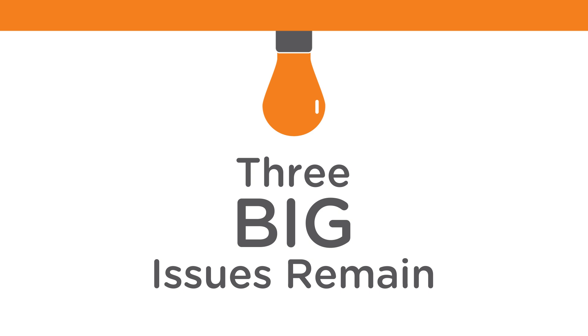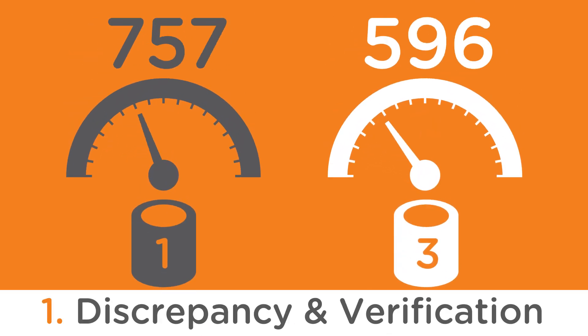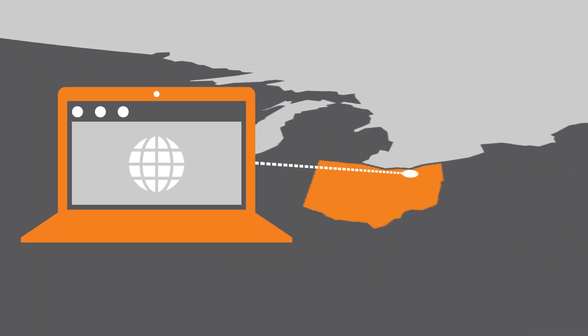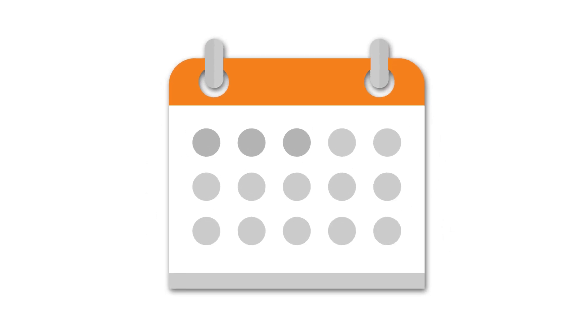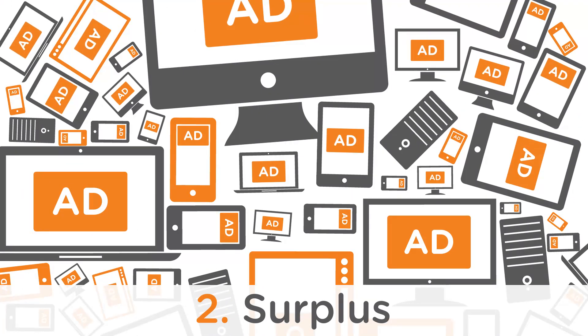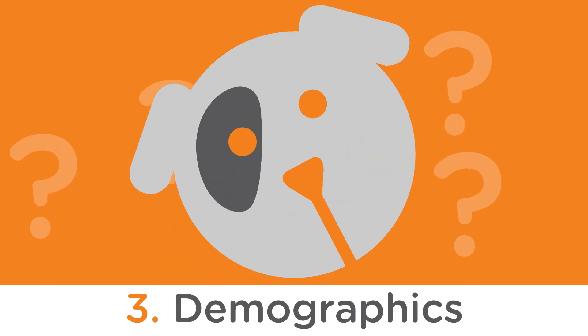But three big issues remain. Discrepancy and verification: first- and third-party servers don't always agree on the number of impressions and clicks, and advertisers need to know for sure if those iPhone users in Cleveland really saw that ad on Saturday. Surplus: there are more ads across channels and formats than publishers can sell, and it's hard to keep up with constantly changing consumer habits. Demographics: publishers' page data can't tell for sure attributes like ages or genders of their visitors, and advertisers want more precise targeting.